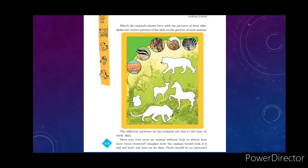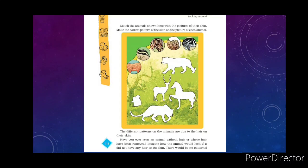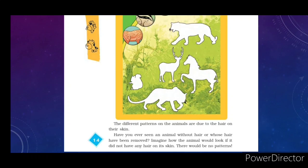On page 14 of your book: 'Match the animals shown here with the picture of their skin pattern. Draw the correct pattern on the picture of each animal.' Some skin patterns are given, and you have to match which animal skin belongs to which pattern. The different patterns on animals are due to the hair on their skin. Animals have different patterns of hair on their bodies — that is why they look different. With these patterns, we can also recognize or identify the animal.